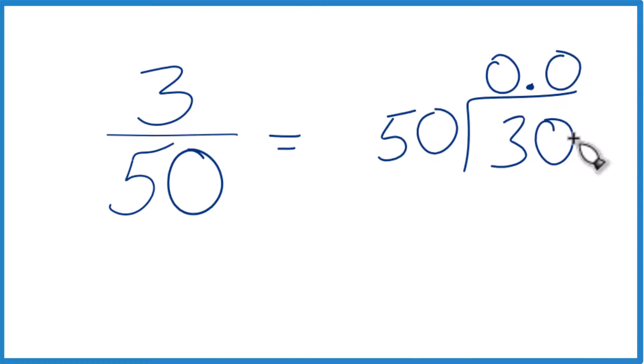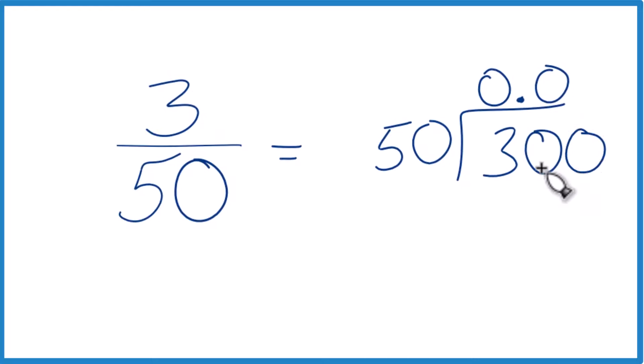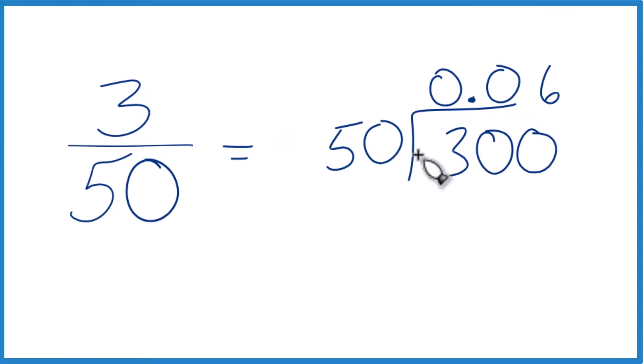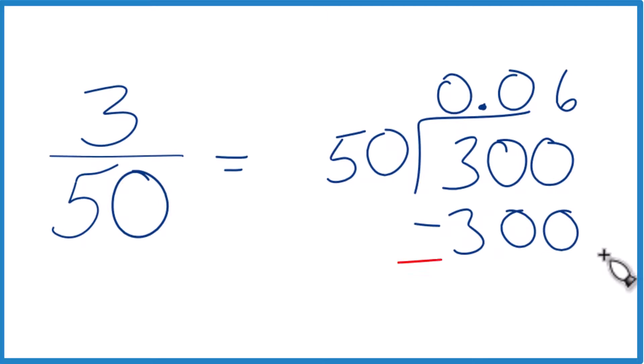Let's put another 0 up here. Now we have 300, and 6 times 50, that's 300. That's it. Subtract, we get no remainder.